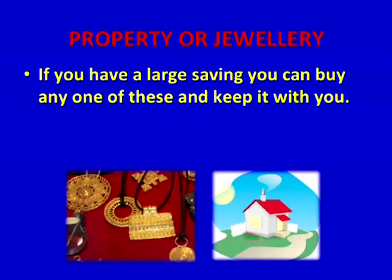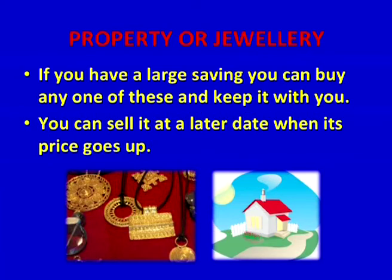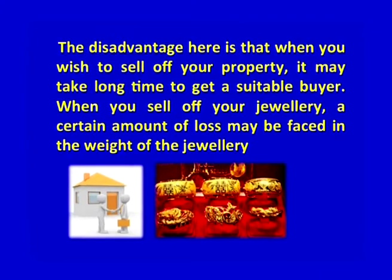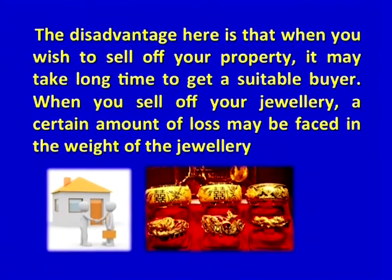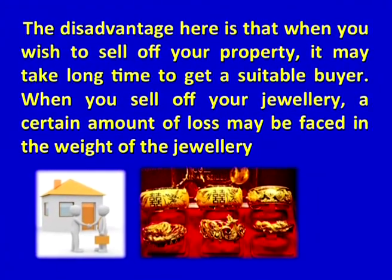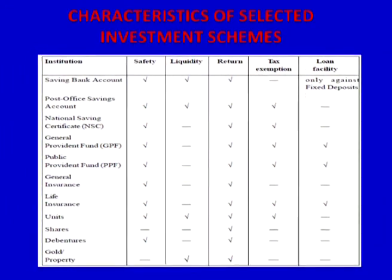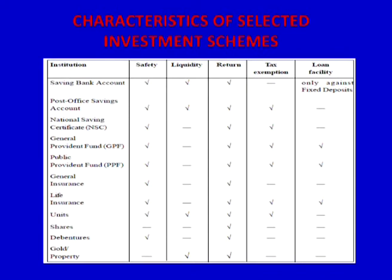Property or jewellery: if you have a large saving, you can buy property or jewellery and sell it at a later date when its price goes up. The disadvantage is that selling property may take a long time to find a suitable buyer, and selling jewellery may involve some loss in the weight of the jewellery. Selection of an investment scheme depends on your capacity to save, safety of the investment, the higher rate of interest, easy liquidity, other benefits, purchasing power, and convenient place of investment.